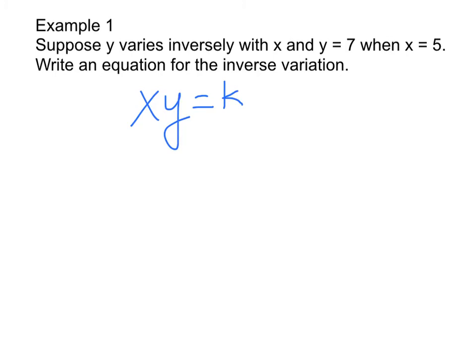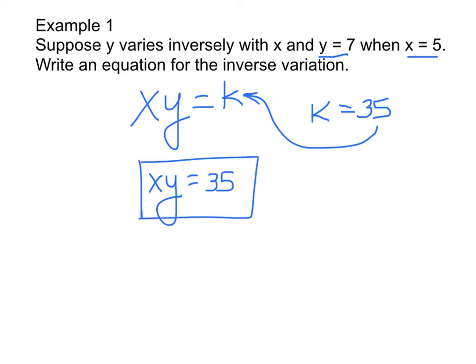xy equals k. If we know y is 7 and x is 5, we know the constant is what? It's going to be 7 times 5, which is 35. So k equals 35. We plug it in. xy is 35. There's your equation for inverse variation. Now, you could also solve it for y. If you solved it for y, you'd divide both sides by x. So y equals 35 divided by x would also be an appropriate equation.